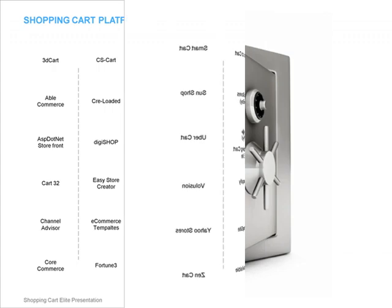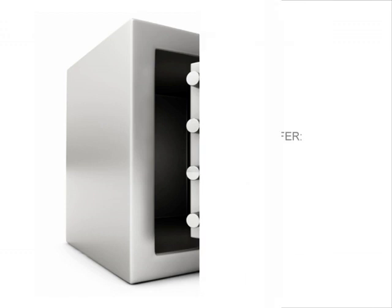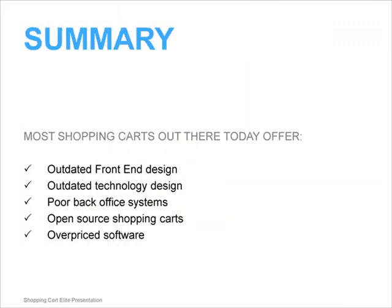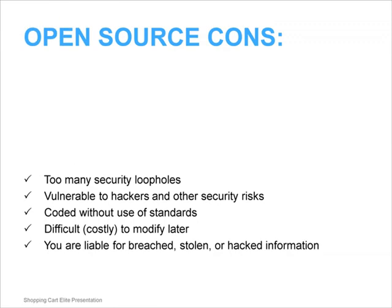Another important point is that a shopping cart platform can be advertised as open source or closed source. Open source means you can modify the software code and host it wherever you want. Closed source or hosted shopping cart means you can only host it with the company offering the shopping cart code and it can't be modified. There are pros and cons to both, but open source shopping carts have too many loopholes making them vulnerable to hackers and other security risks. They are also coded without real standards, making it difficult and costly to modify them later — for example, modifying one piece of code to install a desired feature could end up destroying the whole code.